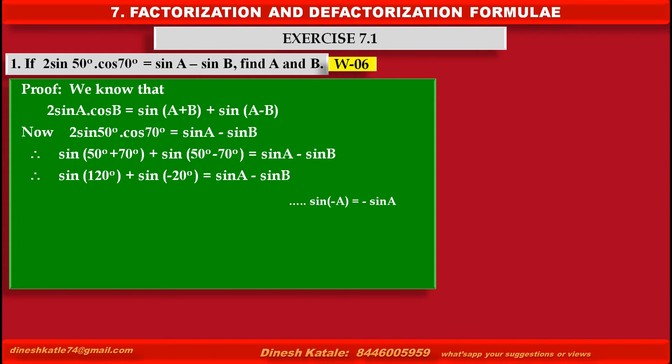As we know, sin(-A) equals minus sin A. Therefore, the statement becomes sin 120° minus sin 20° equals sin A minus sin B.